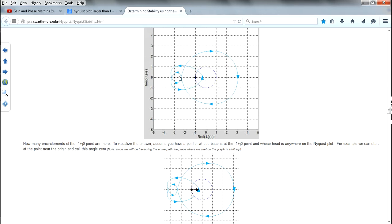I mean, deduce how many zeros. Because if you remember from the Nyquist stability, it says that the number of zeros is dependent on the number of encirclements plus the number of poles.